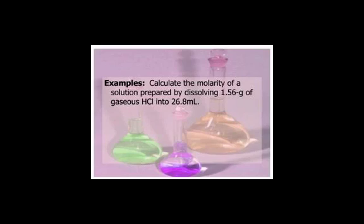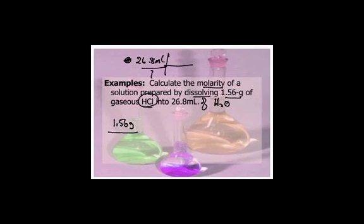So, now we're going to just do a couple example problems. If I want to calculate the molarity of a solution prepared by dissolving 1.56 grams of gaseous hydrochloric acid into 26.8 milliliters of water, we're going to take 1.56 grams divided by... If it's molarity, it's moles per liter. If I have 26.8 milliliters, I'm going to do it dimensionally up here, but I'm going to then, from now on, do it in my head. I could say there's 1,000 milliliters in one liter.